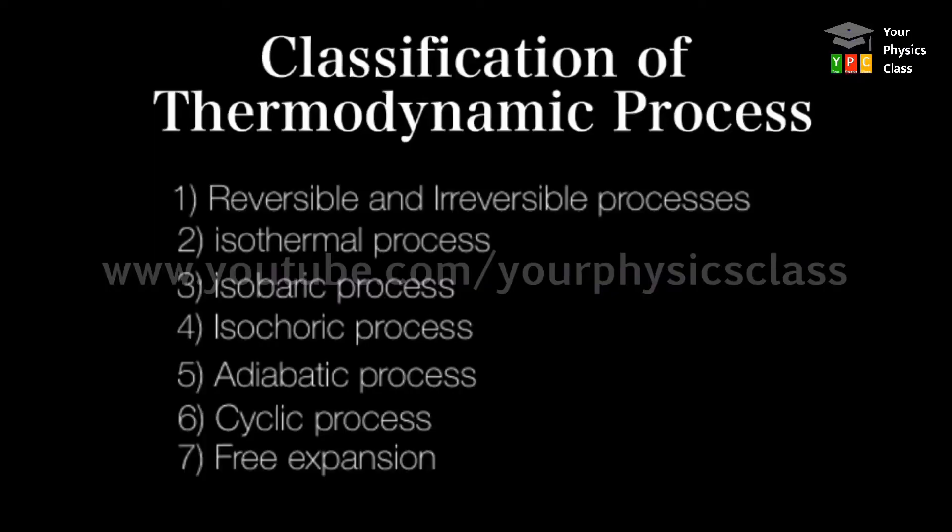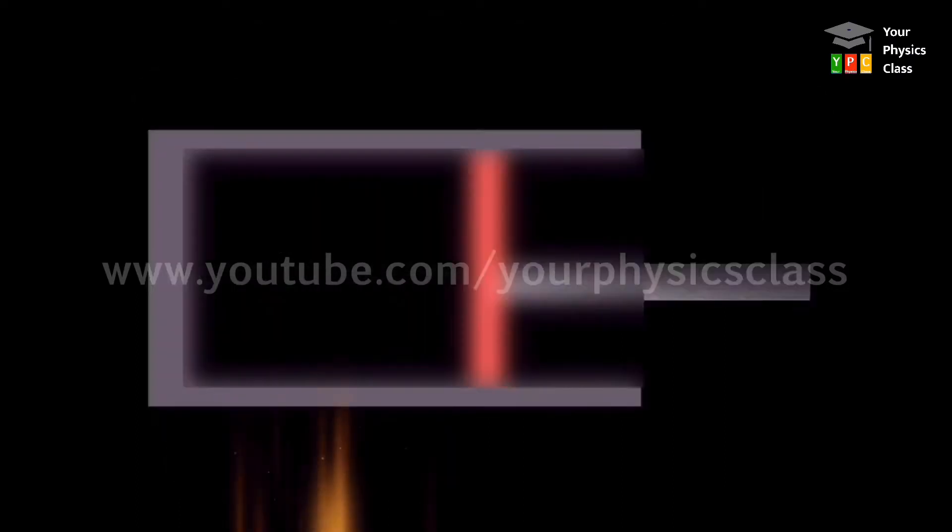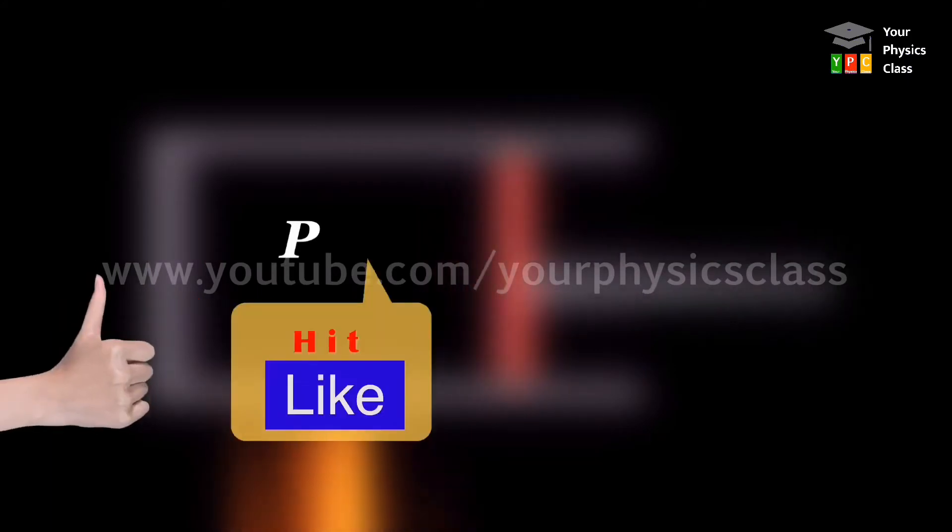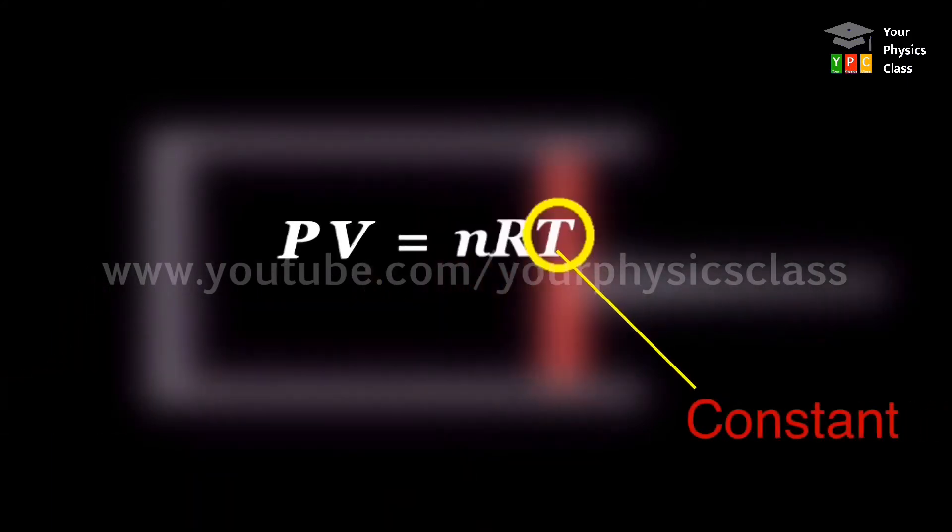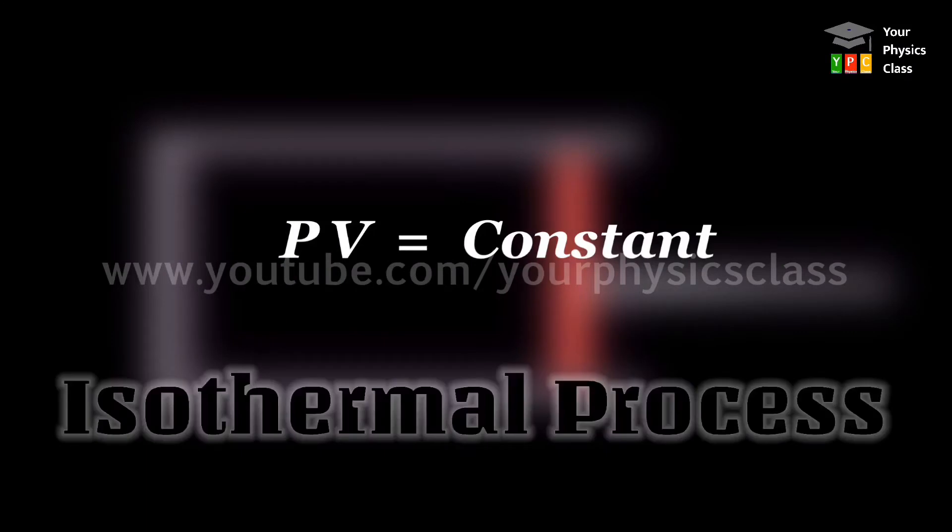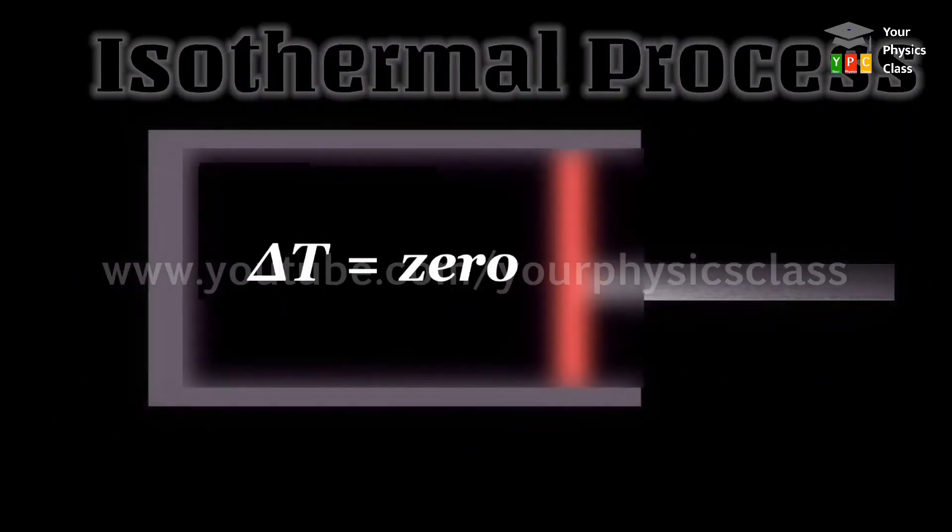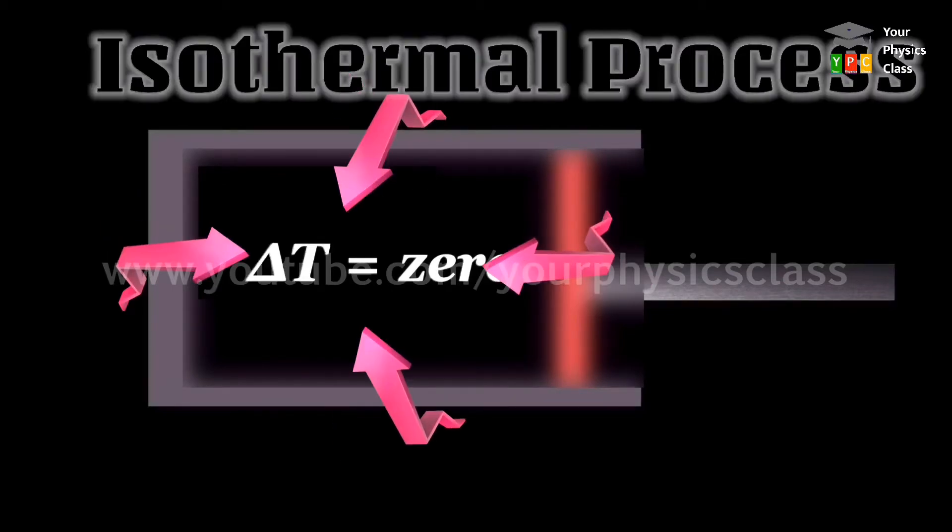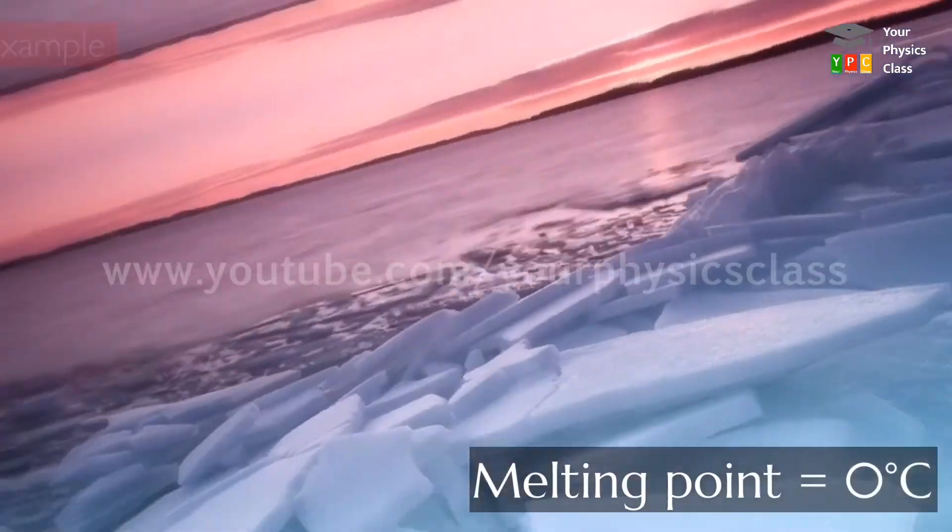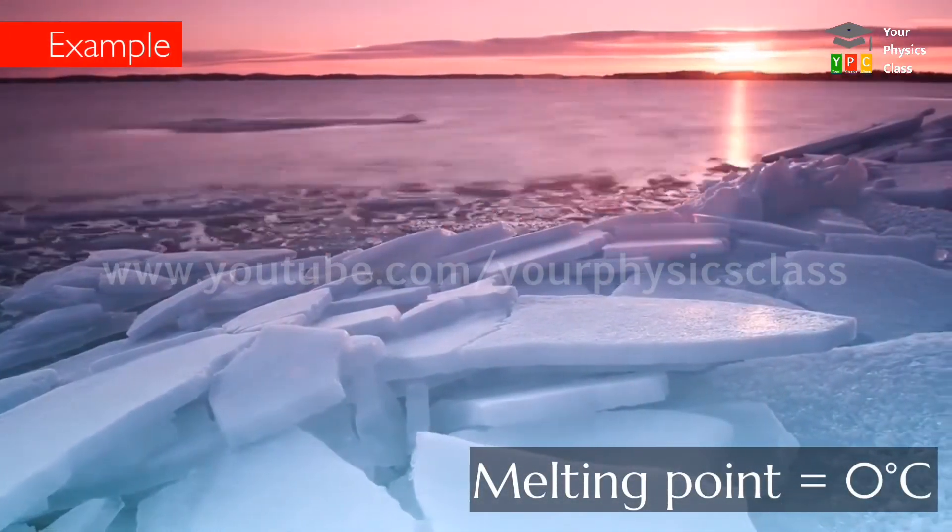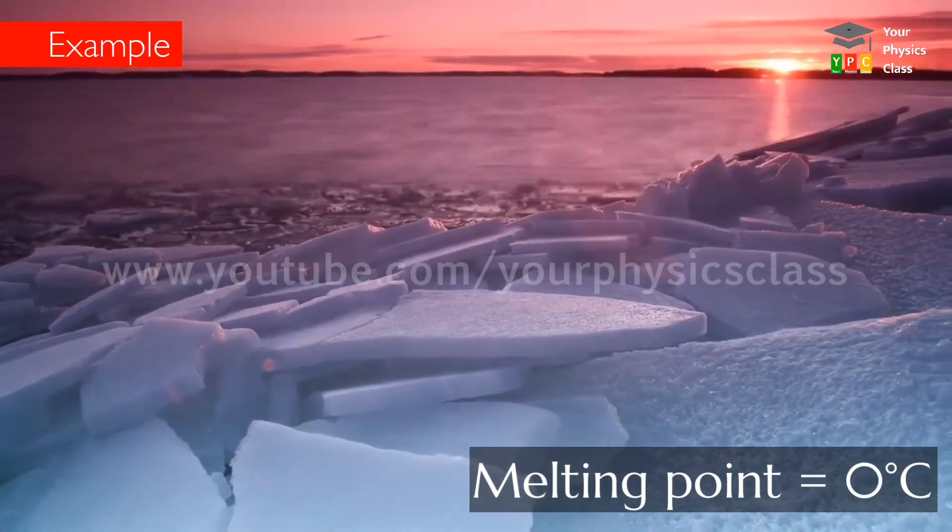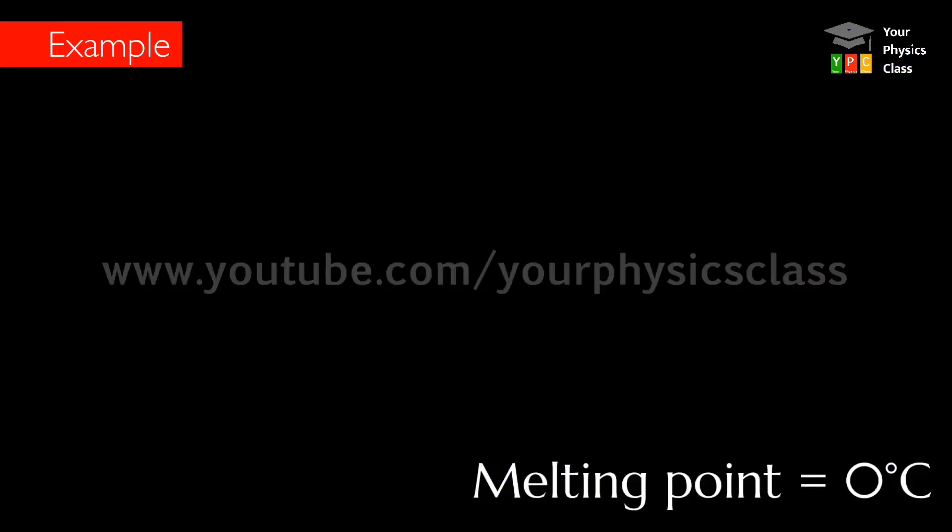Second is isothermal process. The process in which change in pressure and volume takes place at constant temperature is called isothermal process. In this process, changes are extremely slow so that thermal equilibrium with surrounding is maintained throughout the process. For example, melting of ice is an isothermal process as it takes place at constant temperature.